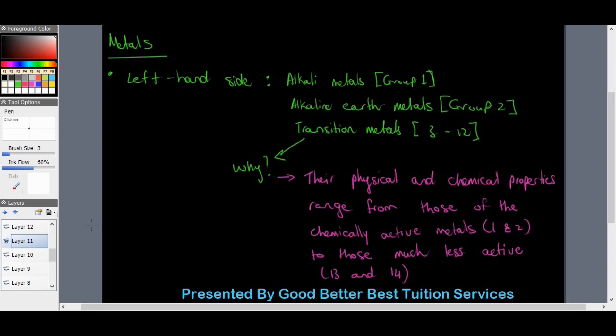Then we have transition metals which exist from group three all the way through to group 12, which is the middle piece of the periodic table. They're called transition metals because their physical and chemical properties range from those of the chemically active metals in group one and two to those of much less active in group 13 and 14. Their properties range from chemically active to less chemically active as we approach group 13 where we find elements such as aluminum, boron.